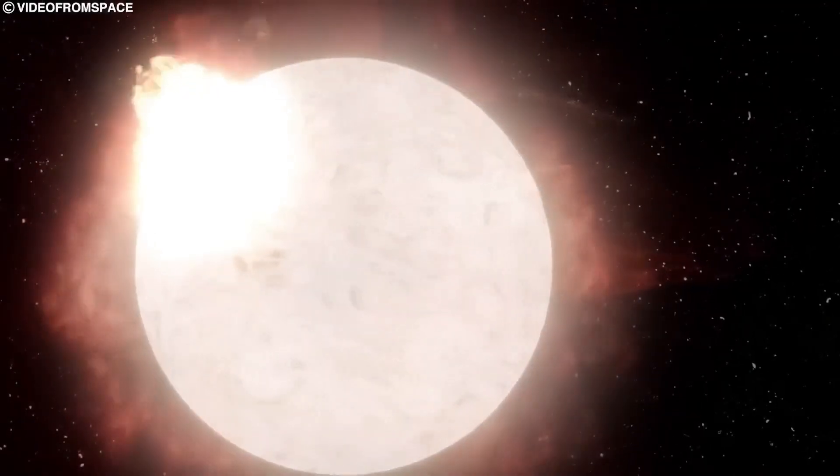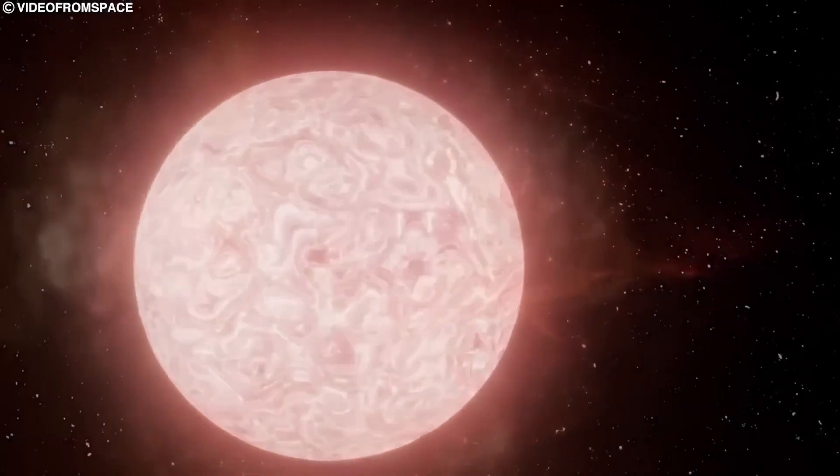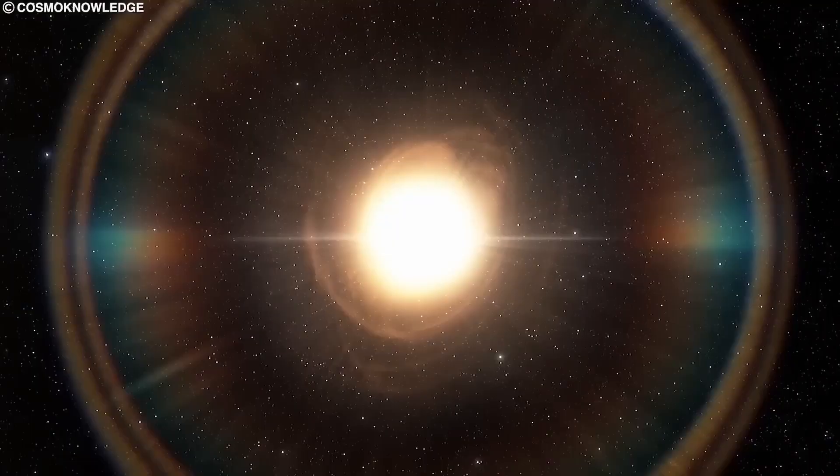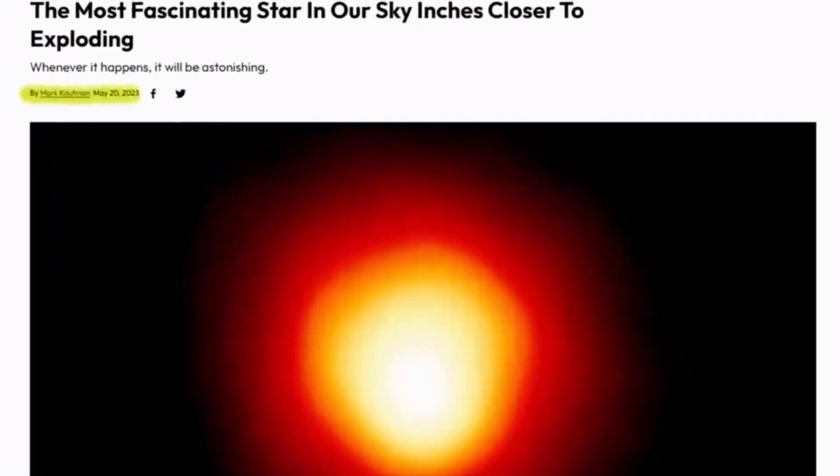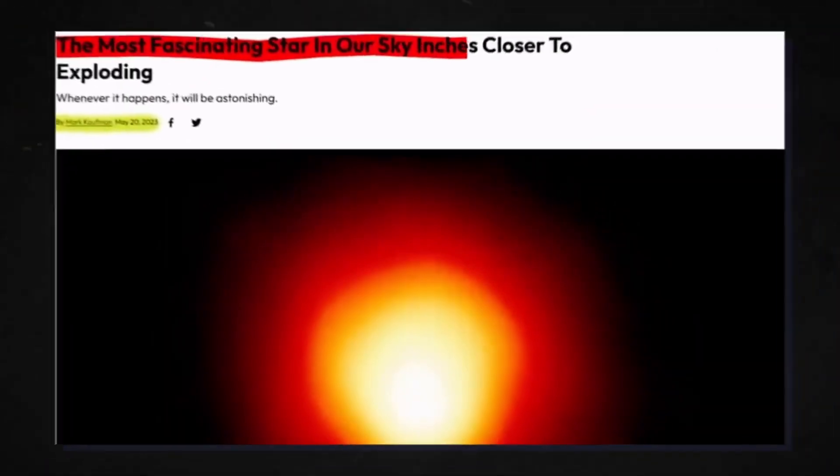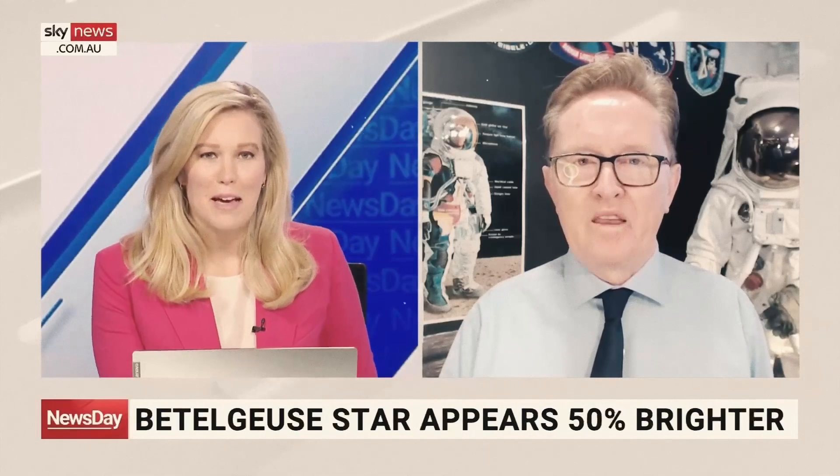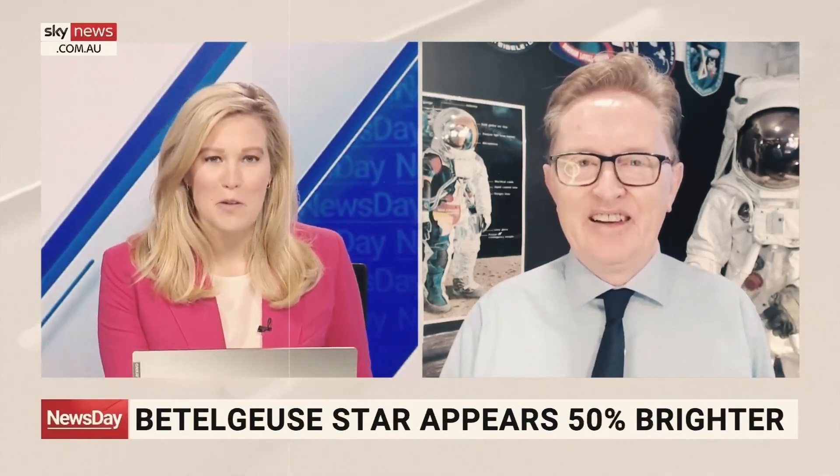Betelgeuse, known for its variable nature, experiences fluctuations in brightness, like a celestial light show. But the great dimming took things to a whole new level. Within a matter of months, Betelgeuse's brilliance faded by a staggering 60%, leaving us bewildered and searching for answers.